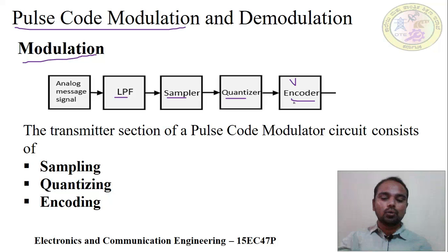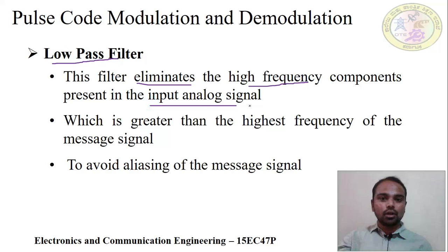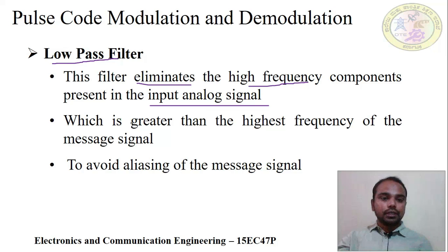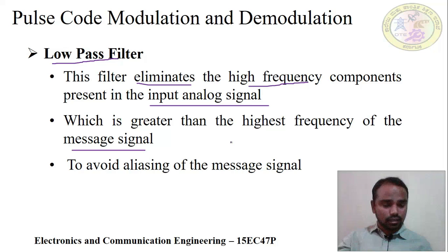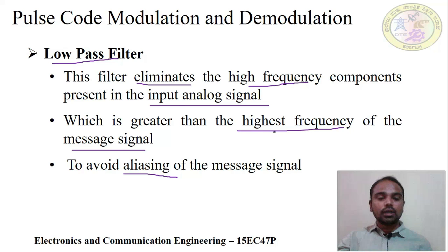The low pass filter eliminates the high frequency components present in the analog input signal — specifically those greater than the highest frequency component of the message signal. This is done to avoid the aliasing problem. Aliasing means that the actual message cannot be properly recovered at demodulation. To avoid aliasing, the highest frequency components are removed at the initial stage using the low pass filter.